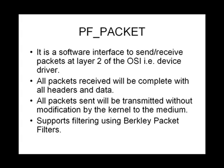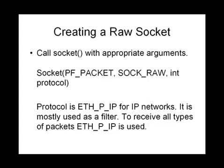Some filtering is supported on the PF_PACKET software interface using Berkeley packet filters — we will discuss this a little later. Now, how do you create a raw socket? Creation is very easy. It is just the same socket call, but with the first argument — the family — set to PF_PACKET, and the type set to SOCK_RAW. These two are fixed. The protocol field of the socket call depends on which protocol you want to receive or send packets of. For IP networks it is normally ETH_P_IP, and to receive all types it is ETH_P_ALL.